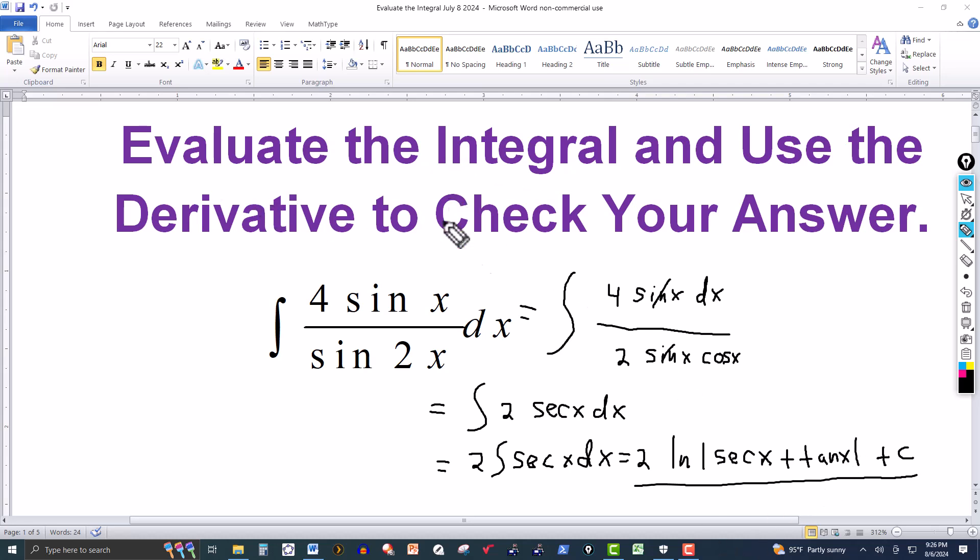And then as far as the check goes, we simply take the derivative of the answer. And we're supposed to get the integrand. So let me just do it on the side over here. The derivative of this expression, the derivative of the constant, of course, will be 0. And then the 2 will be constant.